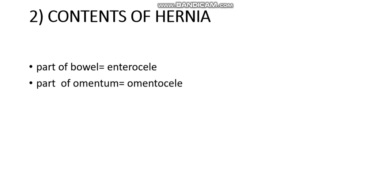The next thing to discuss is the contents of hernia. The hernia can contain part of the bowel, like an enterocele. It can be part of the omentum, like an omentocele. It can be part of the bladder, and sometimes it also contains a part of the ovary.